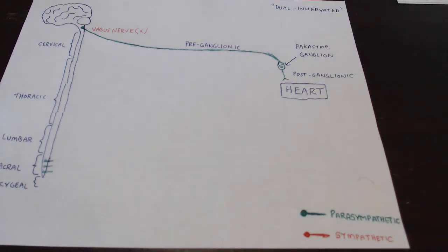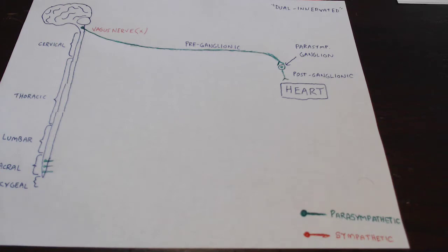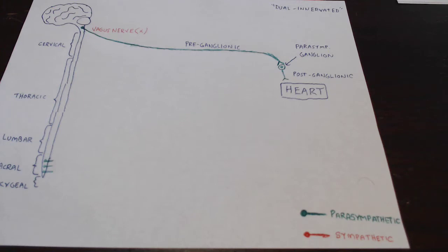Here is the interesting thing about parasympathetic pathways. The pre-ganglionic neuron extends pretty far out and almost gets to the heart, so the pre-ganglionic neuron has a very long axon. Because the post-ganglionic neuron's cell body is already situated pretty close to the target, it doesn't need a very long axon — its axon ends up being quite short. Parasympathetic ganglia tend to be situated very close to their target glands or effectors, or in many cases literally right on top of them. So the pre-ganglionic axon ends up being very long, and the post-ganglionic one ends up being very short.